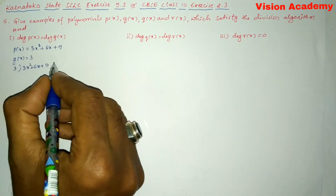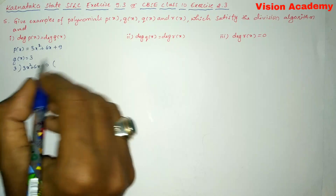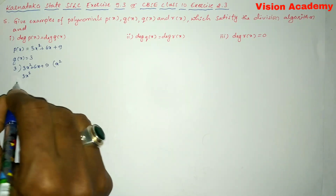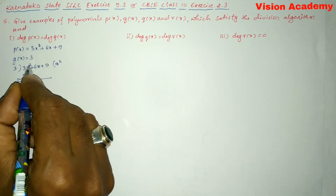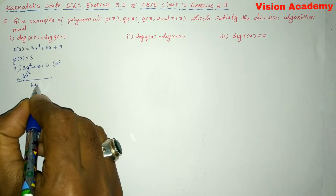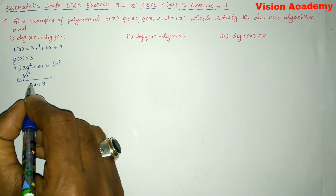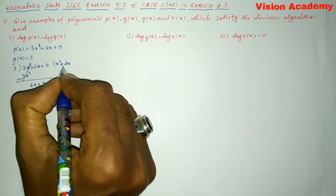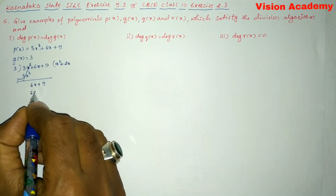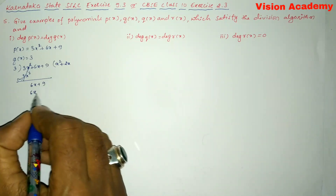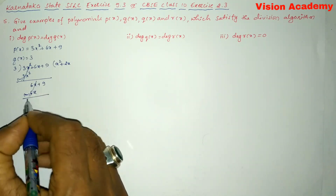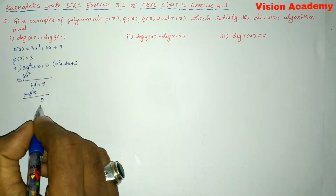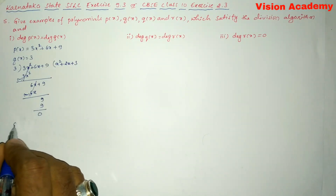Dividing 3x² + 6x + 9 by 3: what do I need to multiply to 3 to get 3x²? That is x², so 3 × x² = 3x². Subtract — both terms cancel. We remain with 6x + 9. What do I multiply to 3 to get 6x? That is 2x. Subtract — those cancel. We remain with 9. What do I multiply to 3 to get 9? That is 3. So remainder is 0.